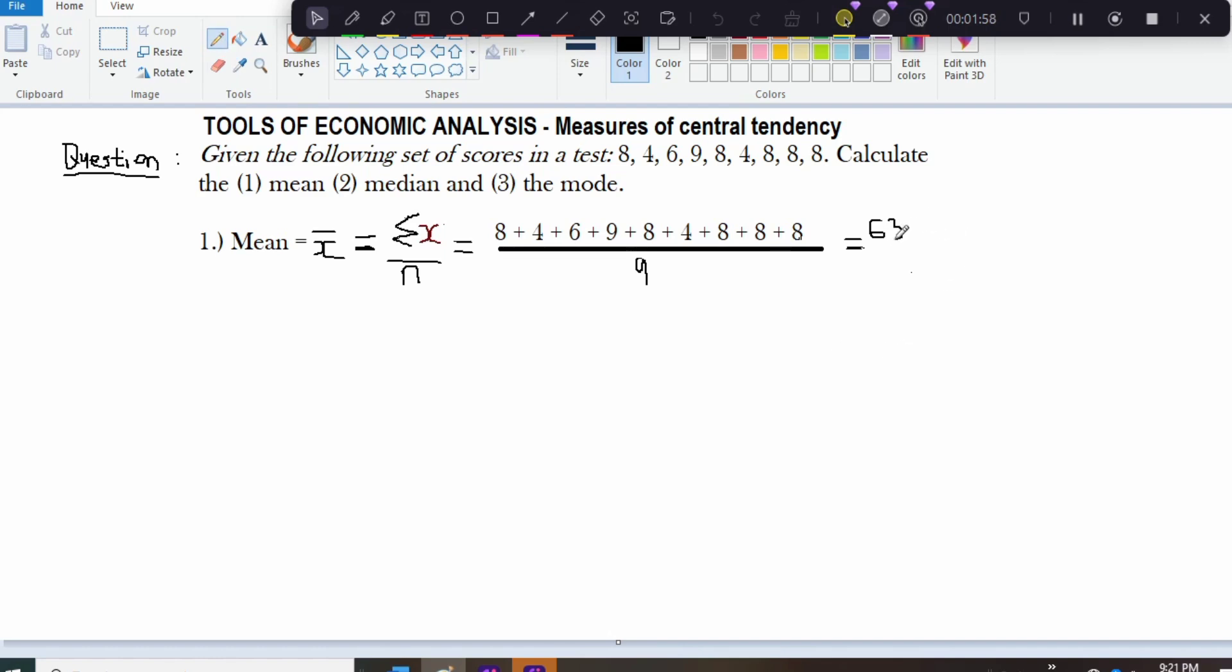63 divided by 9, and that would give us 7. So 7 is the mean.